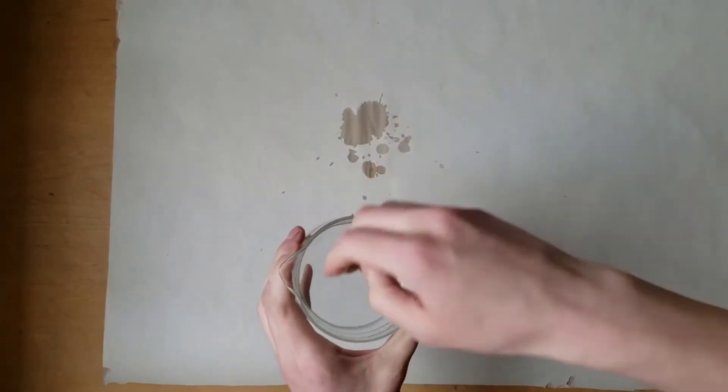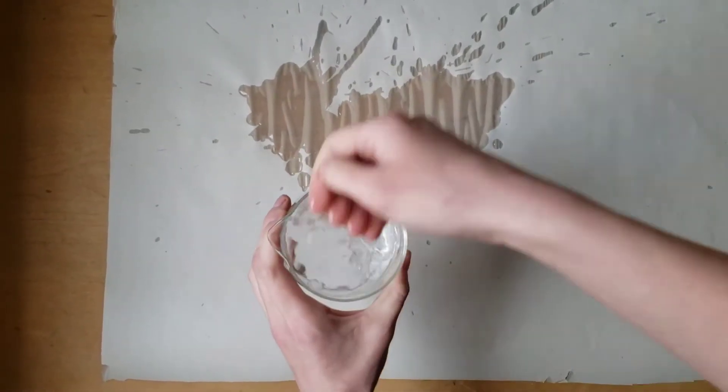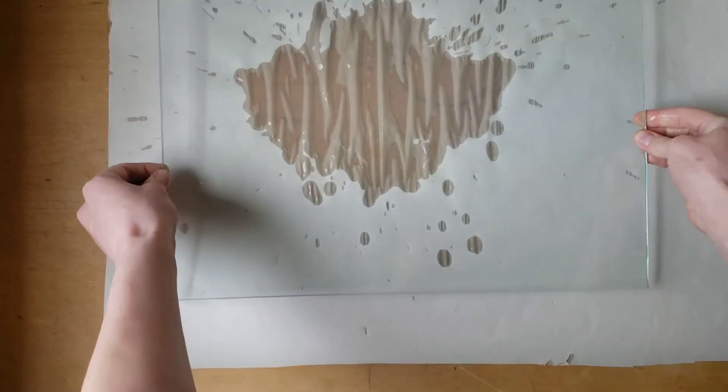Begin by laying down a sheet of newsprint to help with cleanup. This is a rather messy process. Put some water on top to provide the glass with a little grip. Lay down the first sheet of glass.